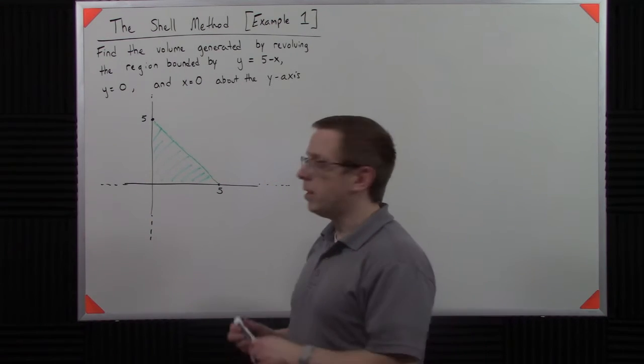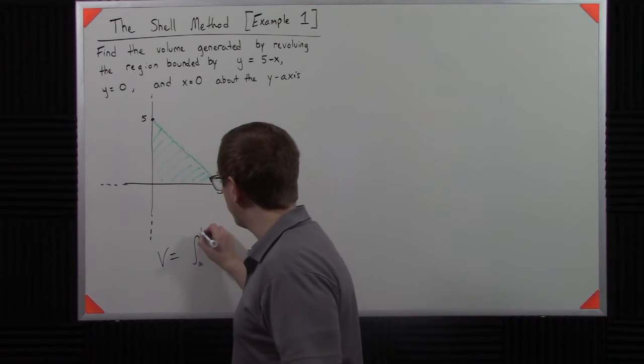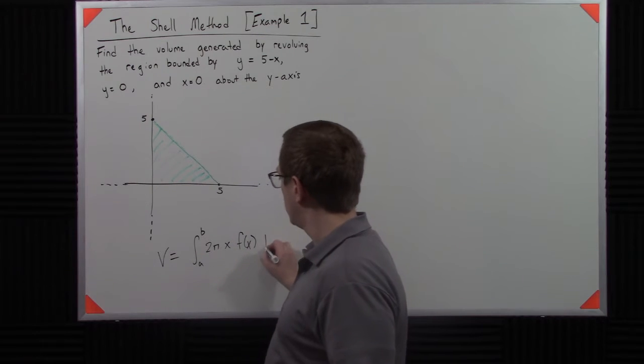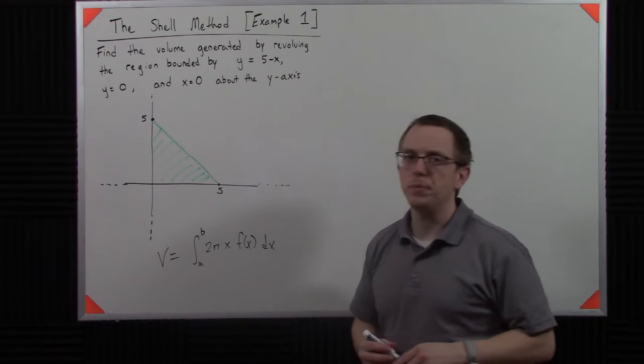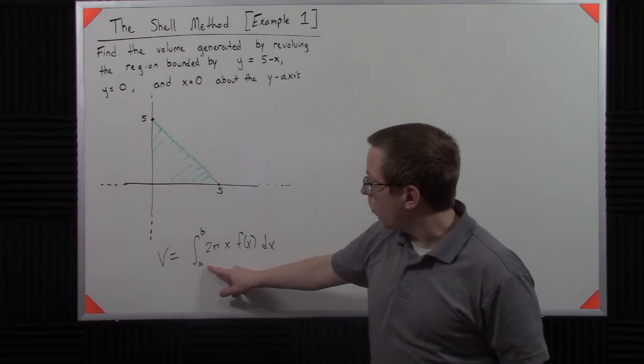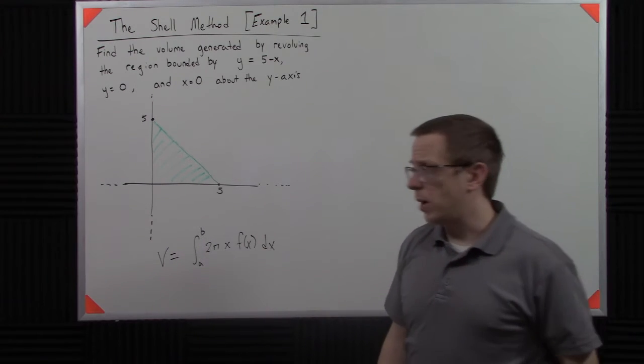So recall that the shell method's volume is from a to b, 2 pi x, f of x dx. That's our setup. So we need to figure out a few things. We need to figure out what a is, what b is, what f of x is, and then of course we need to integrate that.